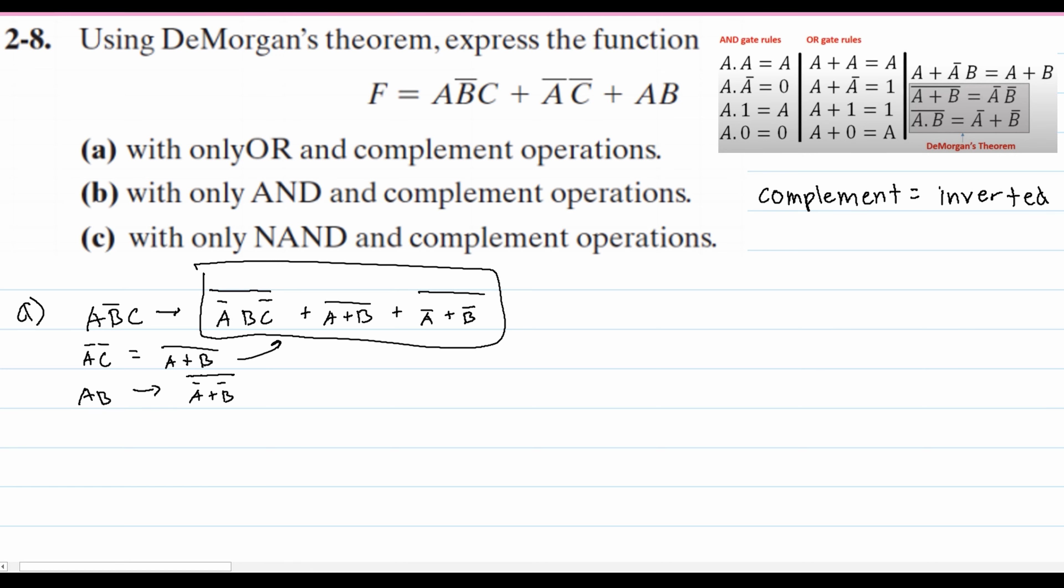Now for part b, with only AND and complement operations. Starting this off, we're going to negate F twice, and then we'll write this in here. We will set this equal to our function that's being negated twice.